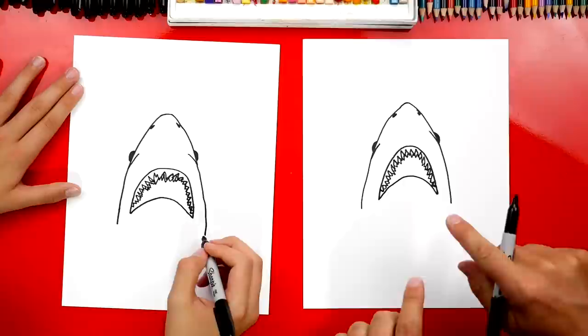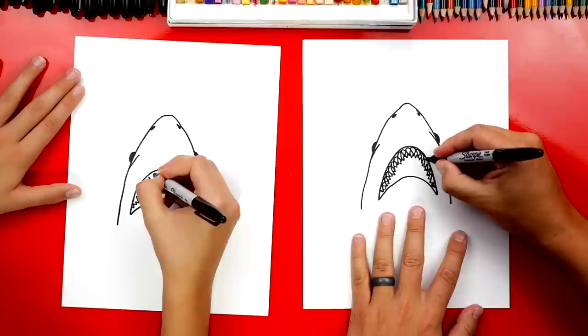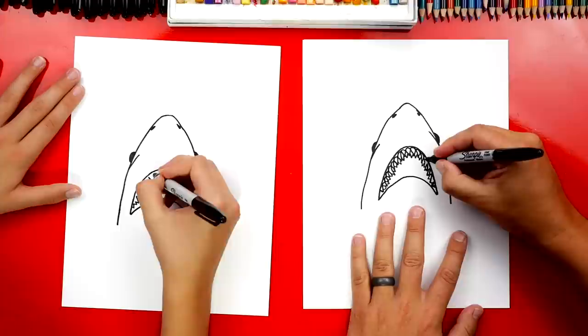Now for each tooth I'm gonna go in and draw a little curve. Can you see that? Yeah. In between each tooth I'm gonna draw an upside-down u-shape so that we can color his gums or the pink tissue that's holding his teeth in to his mouth.